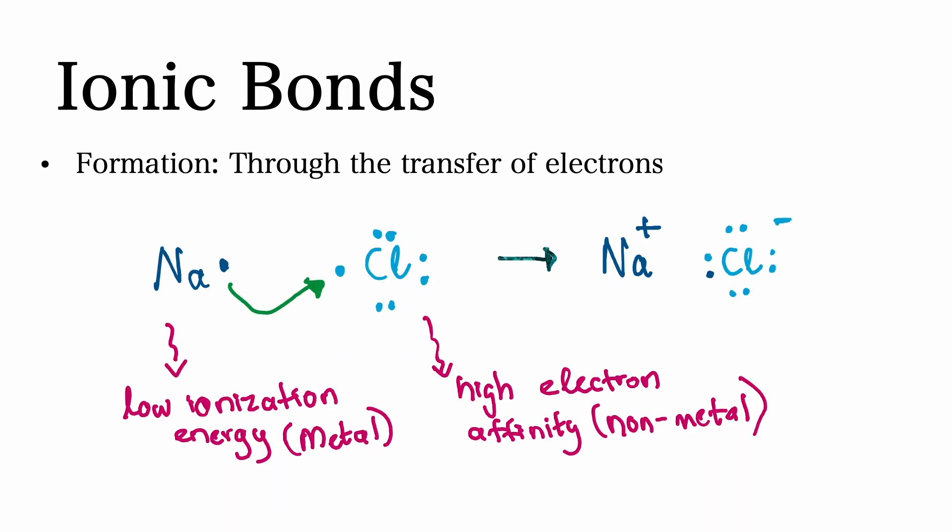As seen here, ionic bonds form through an electron transfer from the atom with the low ionization, i.e. the metal, to the atom with high electron affinity, i.e. the nonmetal.